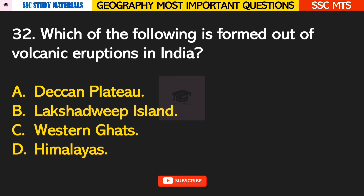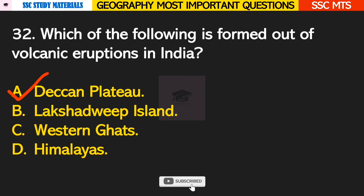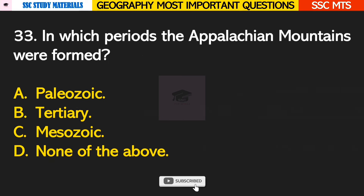Question number 31: in which state is Singur Dam located? Answer B — it is located in the state of Telangana. Question number 32: which of the following is formed out of volcanic eruptions in India? Answer A — Deccan Plateau.